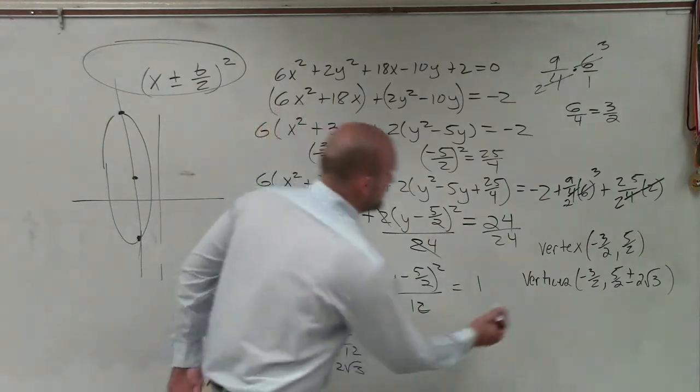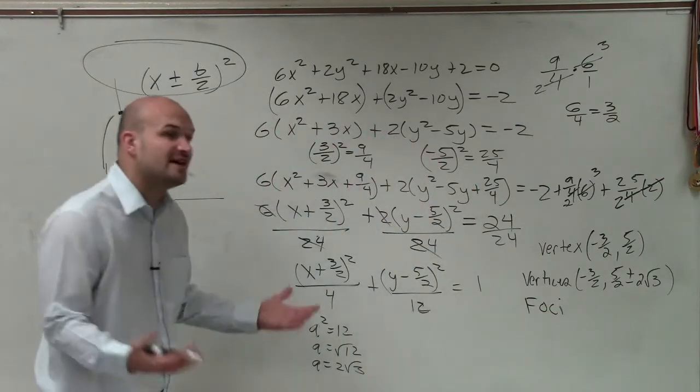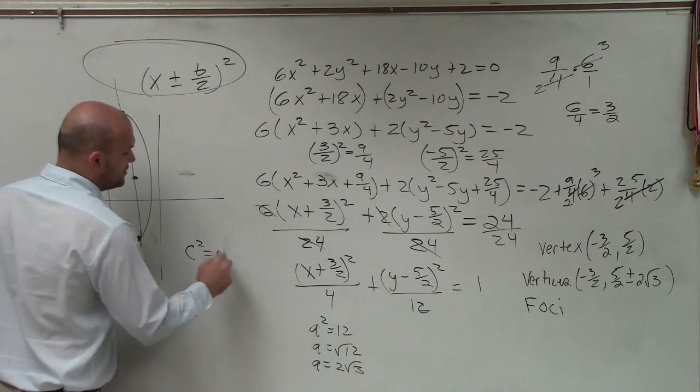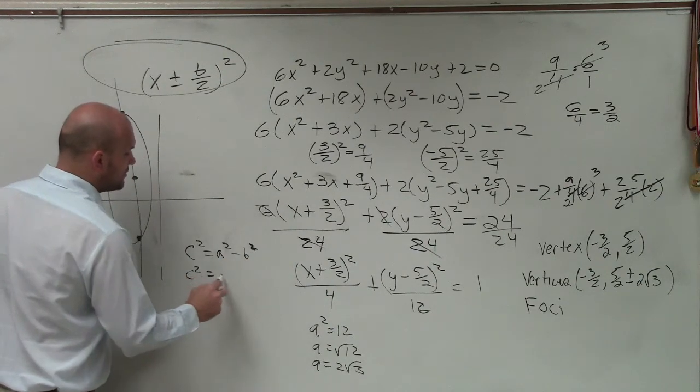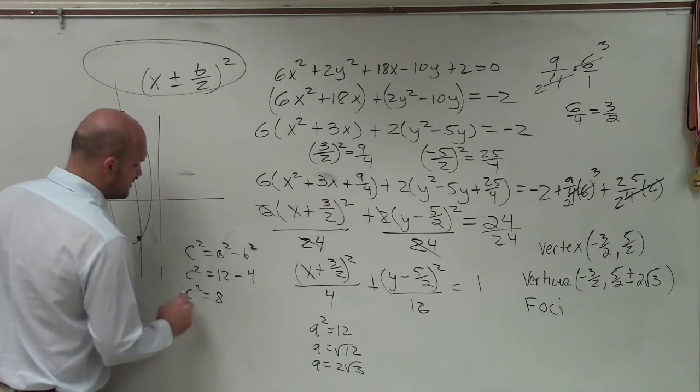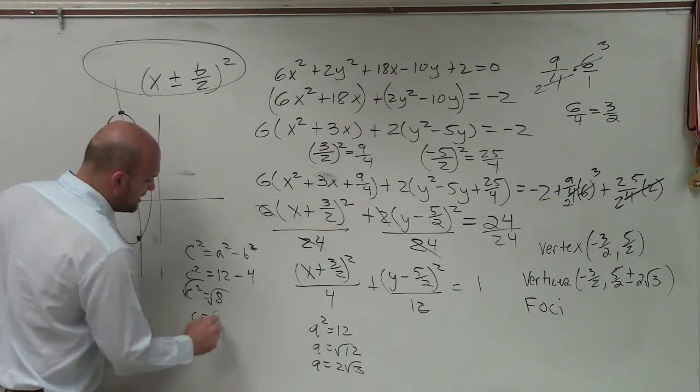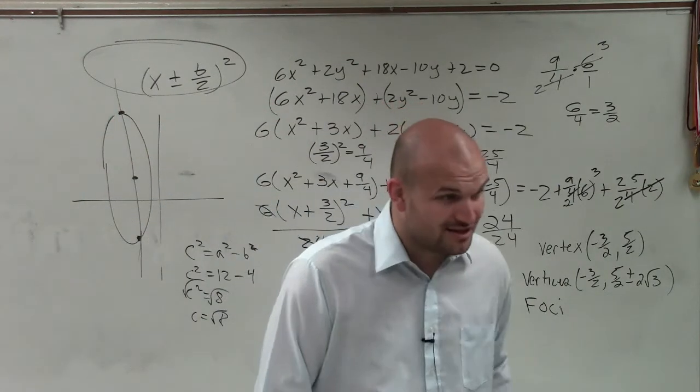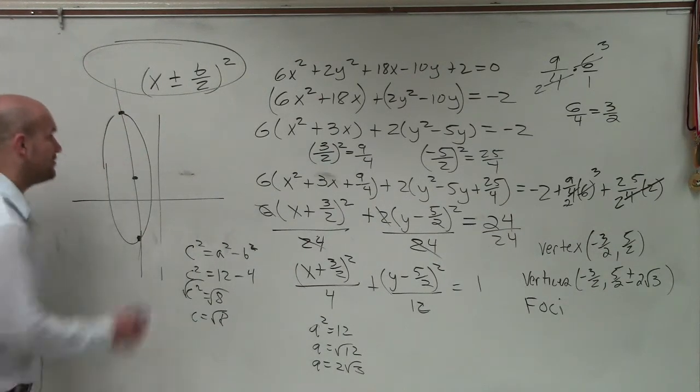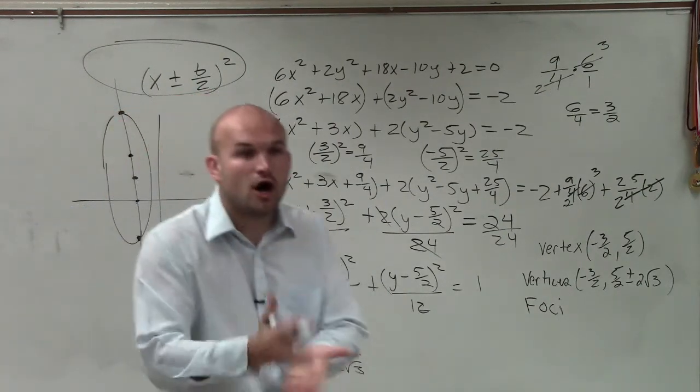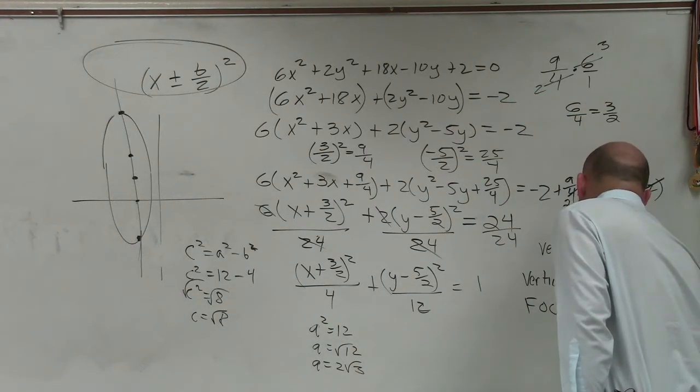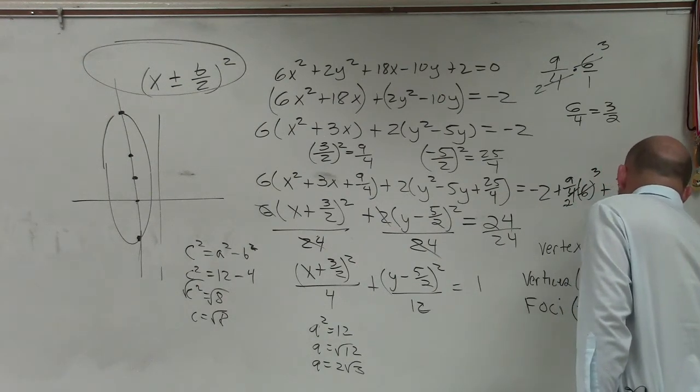The last thing we need to do is find the foci. So to determine the foci, we need to find the value of c. Unfortunately, we only know the value of a and the value of b. Well, remember to find c, c squared equals a squared minus b squared. So c squared equals 12 minus 4. So c squared equals 8. But we'll just keep it as the square root of 8. Now I ask the very important question, am I going to add the value of my foci to the y coordinate or to the x coordinate from the center? The y coordinate, right? Because the vertices, the foci, they all lie on the major axis of symmetry. So again, my foci, negative 3 over 2 comma 5 halves plus or minus the square root of 8.